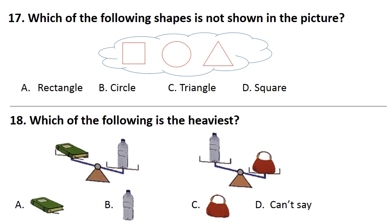Question No. 17. Which of the following shapes is not shown in the picture? Answer is Option A. Rectangle.